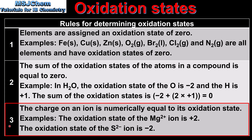Rule 3: the charge on an ion is numerically equal to its oxidation state. For example, the oxidation state of the Mg2+ ion is plus 2, and the oxidation state of the S2- ion is minus 2. The charge equals the oxidation state, except it's written as the sign first followed by the number — so plus 2 or minus 2.